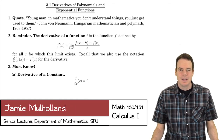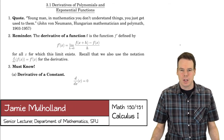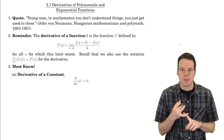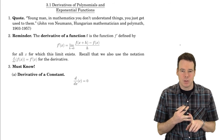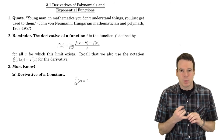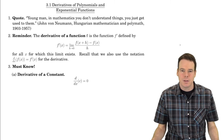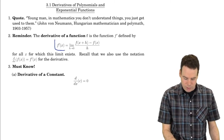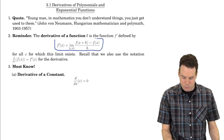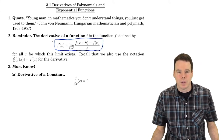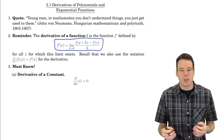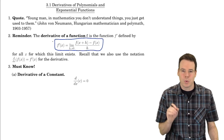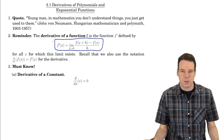Hi everyone, welcome back. In this section we're starting a new chapter. Chapter 3 is all about differentiation rules and we're going to get to some applications of derivatives. The first part — differentiation rules — is what we're starting today. These are quick methods for finding derivatives of functions. Right now all we have is the definition of the derivative. So anytime we want to find the derivative of a function, we go back to the limit definition. Our goal is to find quicker methods — these are known as the differentiation rules.